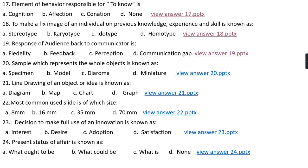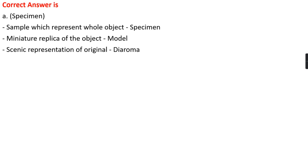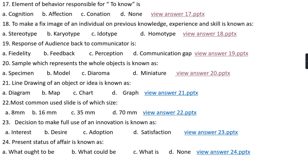Question number twenty: A sample which represents the whole object is known as option A, specimen; option B, model; option C, diorama; option D, miniature. The right answer is option A, that is specimen. A sample which represents the whole object is known as a specimen. A model is a miniature replica of the object, and a diorama is a scenic representation of an original model.